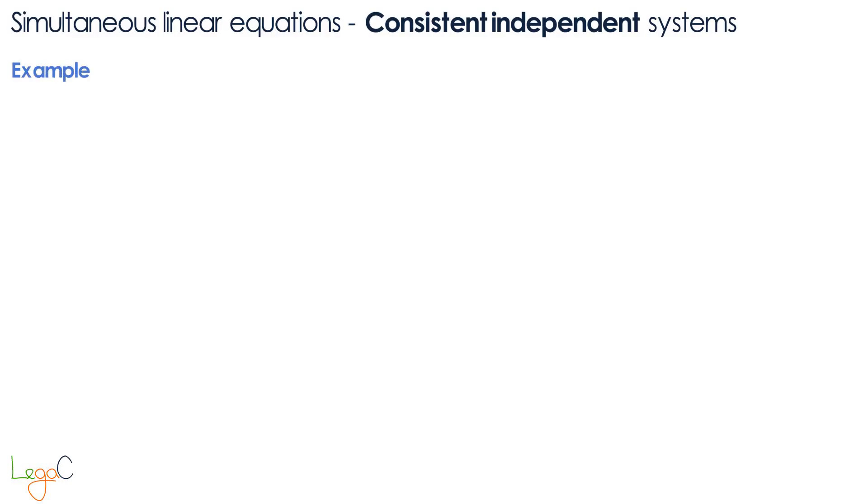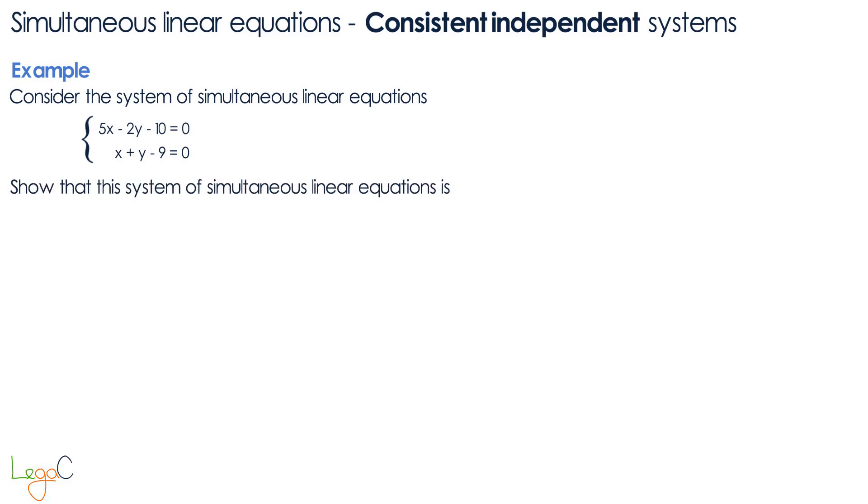In this example we have a system of simultaneous linear equations and we have to show that this system is consistent independent. In other words, the corresponding coefficients of x and y and the constant terms form unequal fractions.